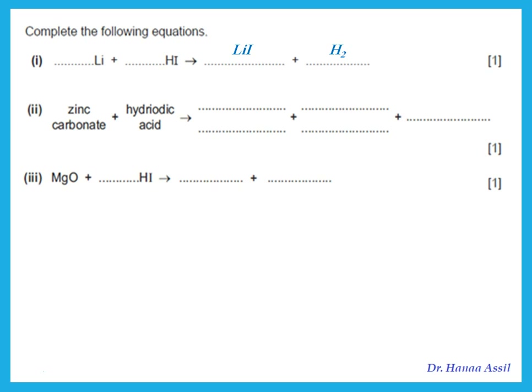You must balance the equation. After the arrow there are two hydrogens, so put two hydrogens before the arrow — meaning two HI. That gives two iodines before the arrow, so put 2 in front of lithium iodide. That gives two lithium, so put 2 in front of lithium. Please practice writing and balancing symbol equations.